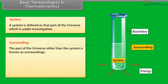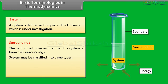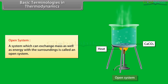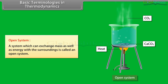Surrounding: the part of the universe other than the system is known as surroundings. For example, if a reaction mixture is taken in a test tube, the reaction mixture constitutes the system, the walls of the test tube constitute the boundary, and everything else is the surroundings. A system may be classified into three types: open system, closed system, and isolated system.